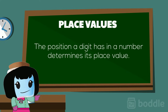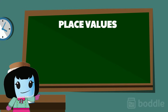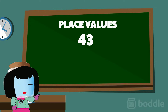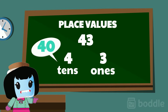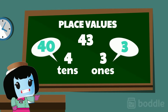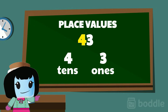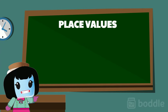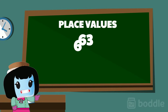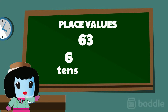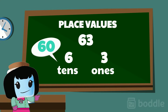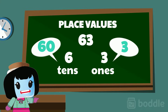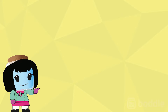The position that a digit has in the number determines its place value. In our previous example, 43 has 4 tens, which is 40, and 3 ones, which is 3. The 4 is in the tens place and the 3 is in the ones place. In the number 63, 6 is in the tens place which means it's equal to 60, and 3 is in the ones place which means it's equal to 3.